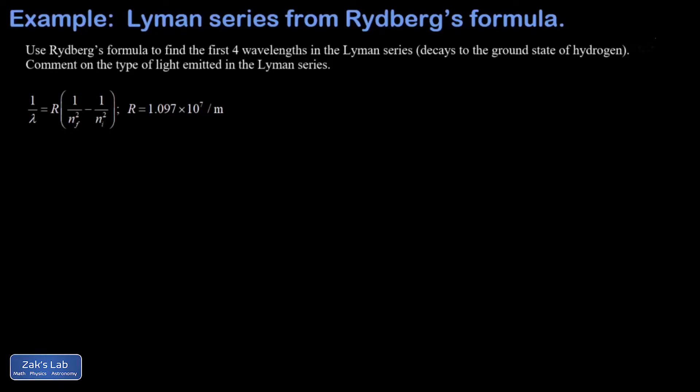In this video, we're asked to use Rydberg's formula to find the first four wavelengths in the Lyman series. So these are photons that are emitted when an electron decays from a higher energy level in the hydrogen atom down all the way to the ground state.